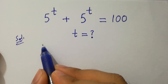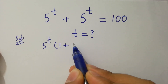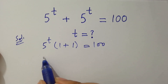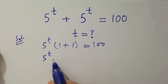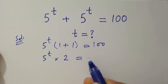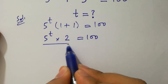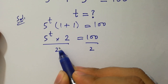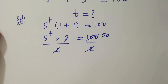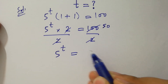We can factor out 5 to the power t. We have 1 plus 1 equal to 100. So 5 to the power t times 2 equals 100. Dividing both sides by 2, since 2 and 2 cancel and 100 divided by 2 is 50, it will be 5 to the power t equal to 50.